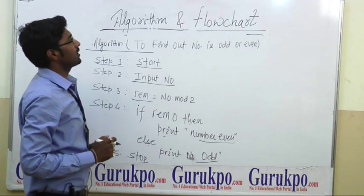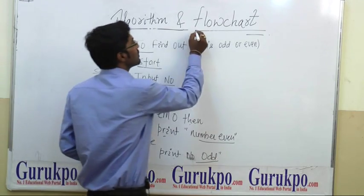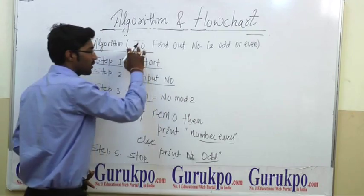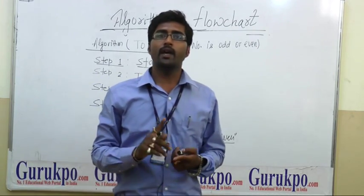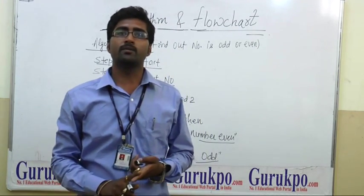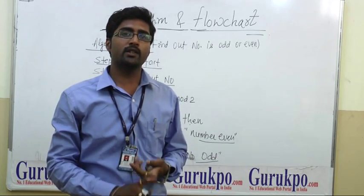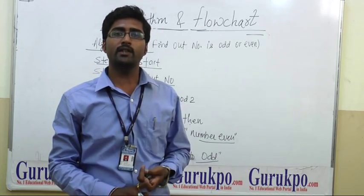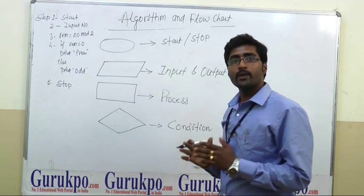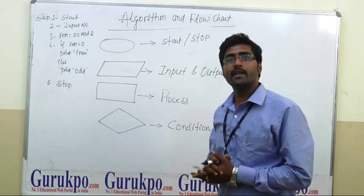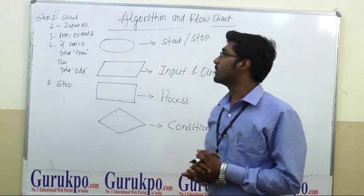Again, if we have to write a flowchart of this algorithm — because a flowchart is always written for an algorithm — a pictorial representation of any algorithm is known as a flowchart. Since it is a pictorial representation, it uses some special symbols.